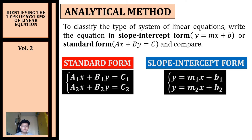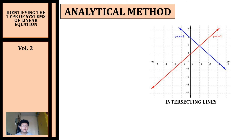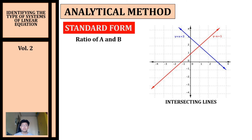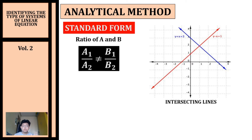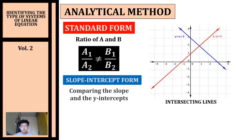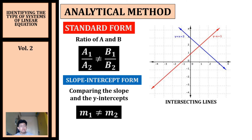Let's talk about intersecting lines. By just looking at your equation, you can identify that you're going to have an intersecting line by looking at the ratio of a and b. If the ratio of a to b is not equal, we will have an intersecting line. If your system is written in slope-intercept form, we compare the slopes — the slope of the first equation should not be equal to the slope of the second equation.